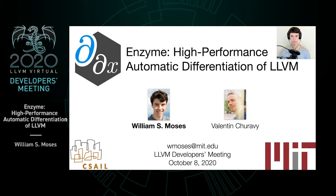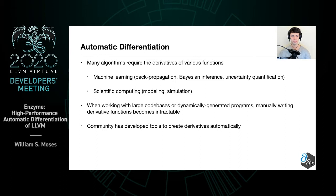Many algorithms in a variety of fields such as machine learning and scientific computing require the computation of the derivatives of functions in order to compute their results. When working with large codebases, however, manually writing such derivative functions quickly becomes intractable, or in the case of dynamically generated programs, impossible. As a consequence, the community has developed tools to create such derivatives automatically.